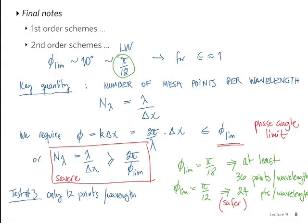This is a very important consideration. The number of mesh points per wavelength is a very important criterion, and we can obtain it from the analysis we've done for each numerical scheme we choose to use.